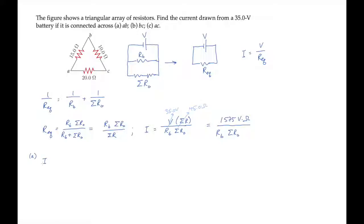In part A, the battery is across the 15 ohm resistor, so R sub B is 15 ohms, and the other resistances sum to 30 ohms. That gives us a current of 3.5 amps.